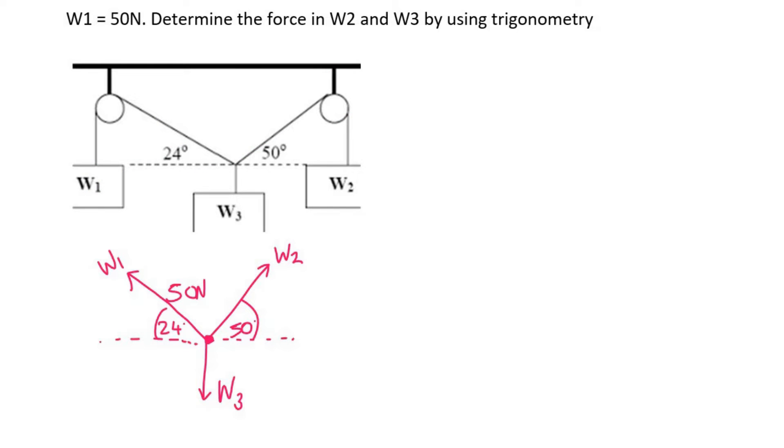We're going to be using trigonometry. So, what we need to do now is we need to construct a little triangle, but you don't need to use a ruler and a protractor, that's not what I'm saying. So, I'm going to start here and I'm going to do W1. We know that that's 50 Newtons, now check this out, we know that this angle here is 24 degrees. The next one I'm going to do is W2. Now I know that W2 will go something like that, I don't know how far it must go.